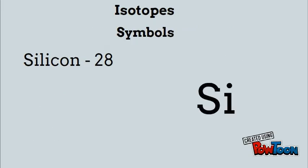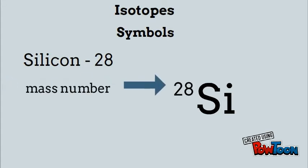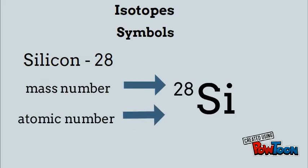In the symbol for an isotope, you always have the mass number on the top left. So for silicon-28, there's going to be a 28 on the top left. The atomic number is always on the bottom left, and if there is a charge, it's going to go on the top right.